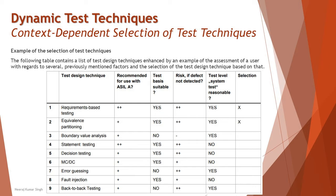This section talks about a particular example of selection of a test technique based on several factors. We have spoken about what is dynamic testing and what specific techniques we can have — like requirement-based technique, fault injection technique, back-to-back testing, plus techniques from the foundation covering black box and white box. Here we are taking a template example of how a decision can be made about which techniques to apply.